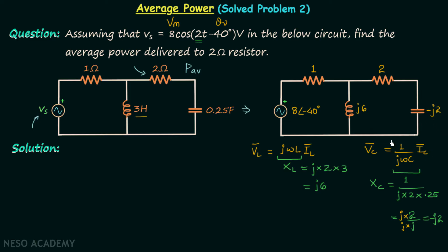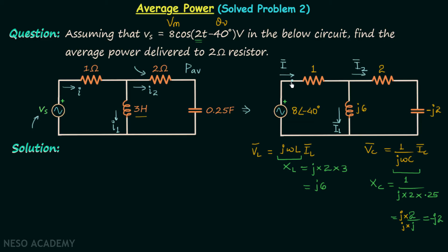In this way we have converted the circuit to the frequency domain and now we can move on to the calculation of average power. To calculate the average power delivered to the 2-ohm resistor, we first need to find the current I2 flowing through it. Let the current in the main branch be I and in the other branch be I1. We will first find I phasor using the total impedance Z.